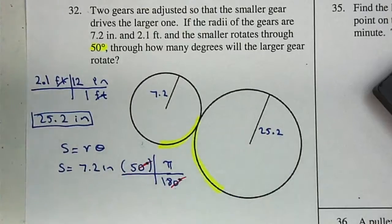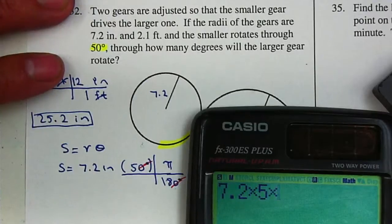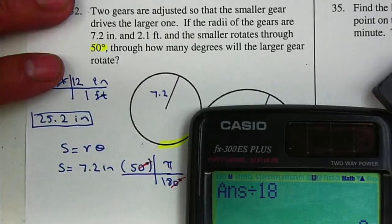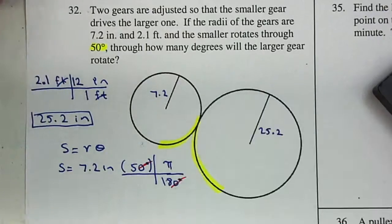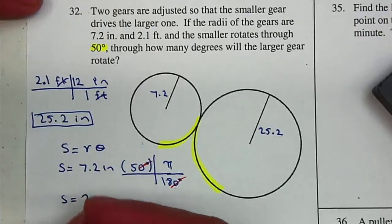I can just multiply it out. So I multiply 7.2 times 5 times pi, and whatever I get I'm going to divide it by 18, which will be 2 pi. So S equals 2 pi.